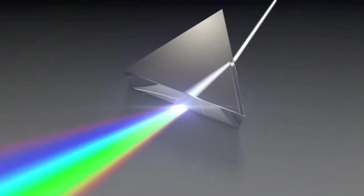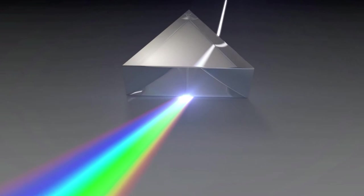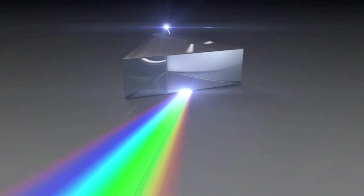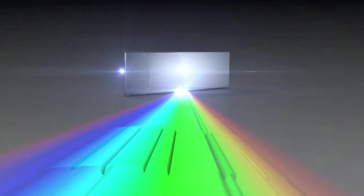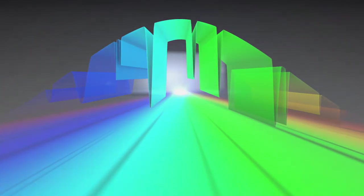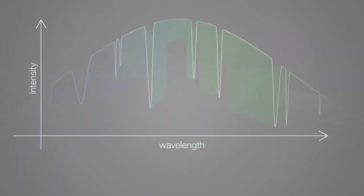Any object that absorbs or emits light can be studied with a spectrograph to determine characteristics such as its temperature, density, chemical composition, and velocity.